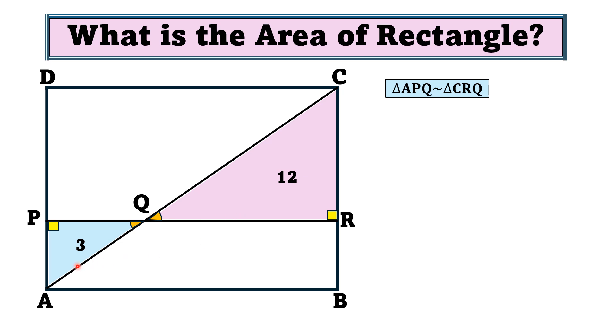Now, this triangle has area 3 and this has area 12, which are in ratio 1:4. So when the area of two similar triangles is in ratio 1:4,